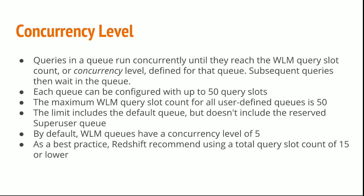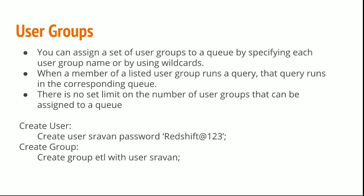By default WLM queues have a concurrency level of 5. As a best practice, Redshift recommends using a total query slot count of 15 or lower. You can assign a set of user groups to a queue by specifying each user group name or by using wildcards. When a member of a listed user group runs a query, the query runs in the corresponding queue. There is no set limit on the number of user groups that can be assigned to a queue.